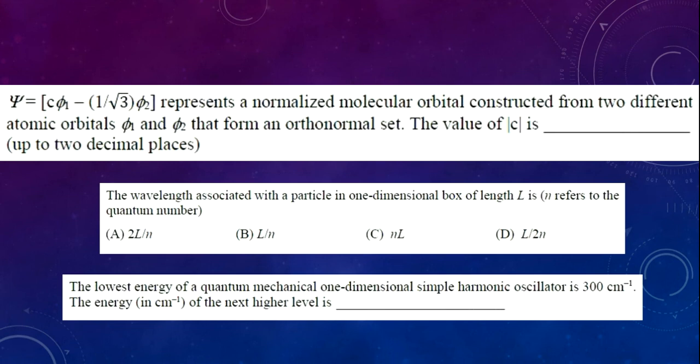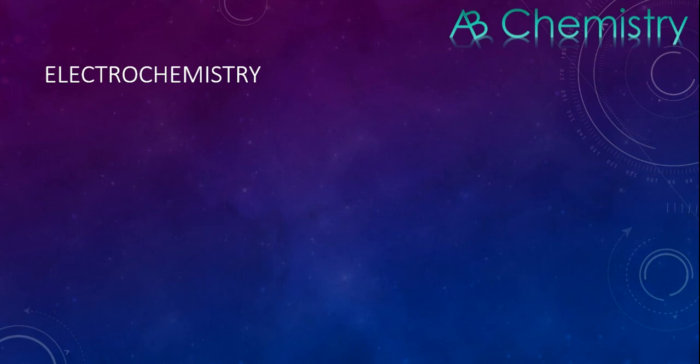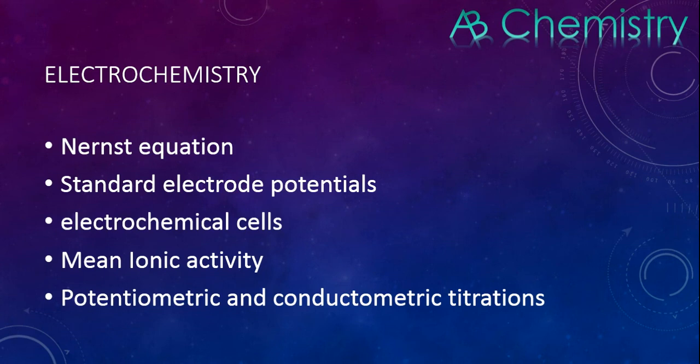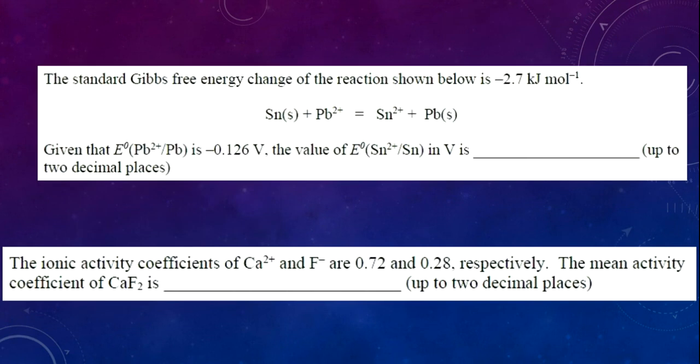In electrochemistry, the main focus is on the Nernst equation and standard electrode potential, electrochemical cells, mean ionic activity, potentiometric and conductometric titrations. You just have to know the graphs—they mostly ask about the graphs. Also, the ΔG relation with electrode potential: ΔG = -nFE and ΔG = -RT ln K. They mostly ask questions like this. The standard Gibbs free energy question can be solved by the equation I mentioned: ΔG = -nFE.